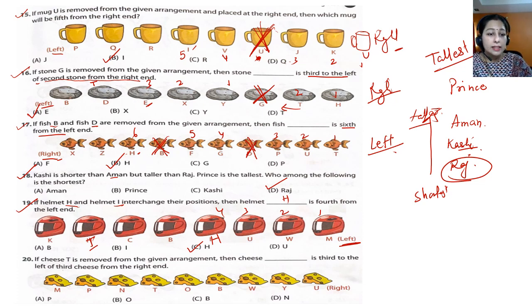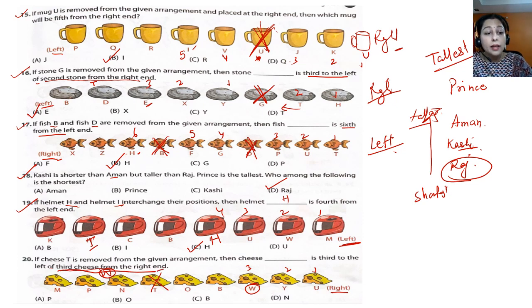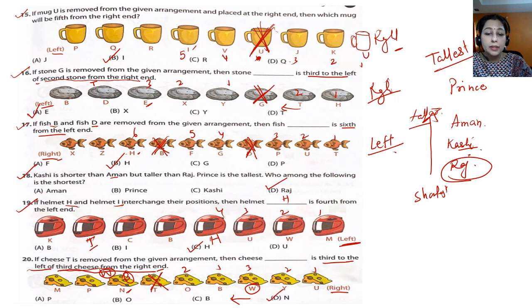Question 20: if cheese T is removed from the given arrangement, then cheese dash is third to the left of the third cheese from the right end. Break it apart: third cheese from the right — one, two, three — that's W. Third to the left of W — skip the removed T: one, two, three — the answer is N. Option D is correct.